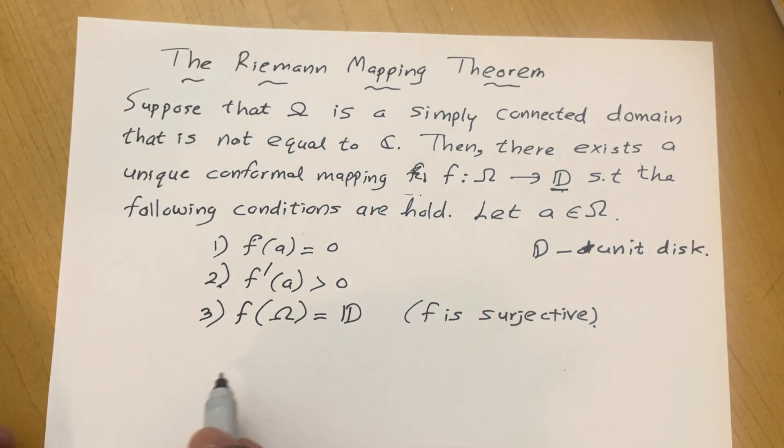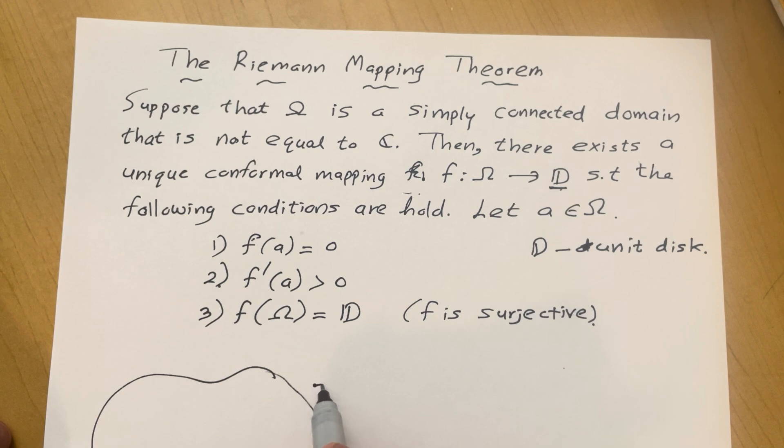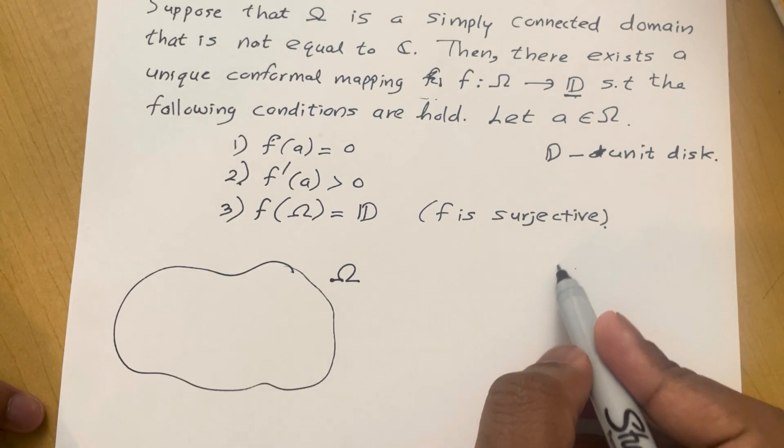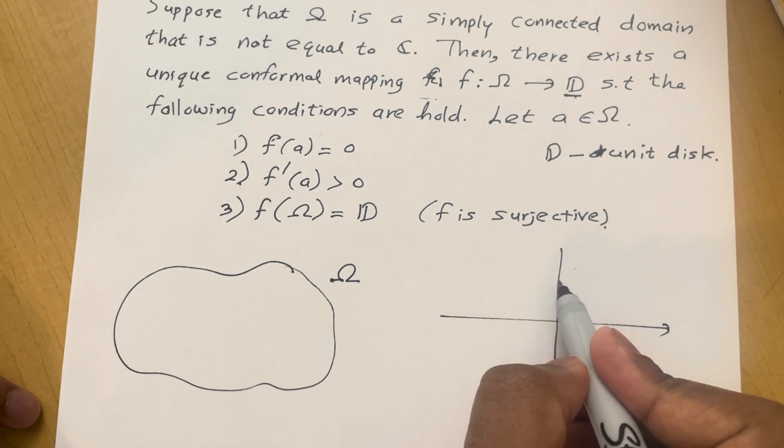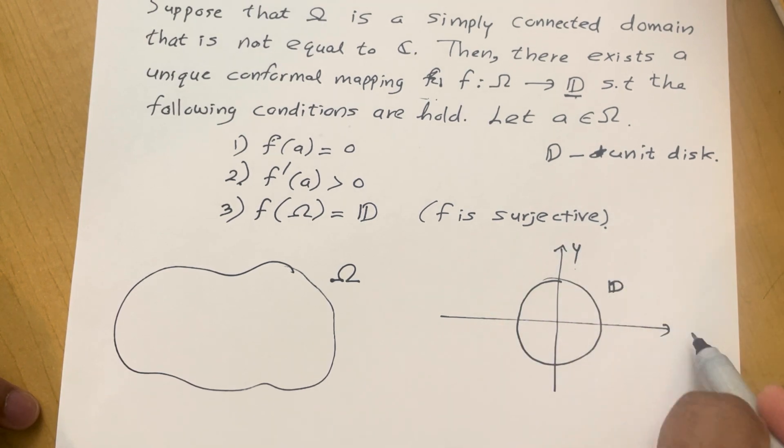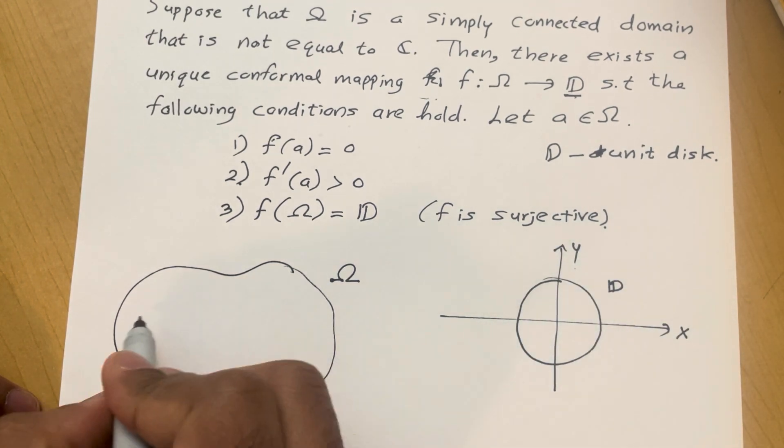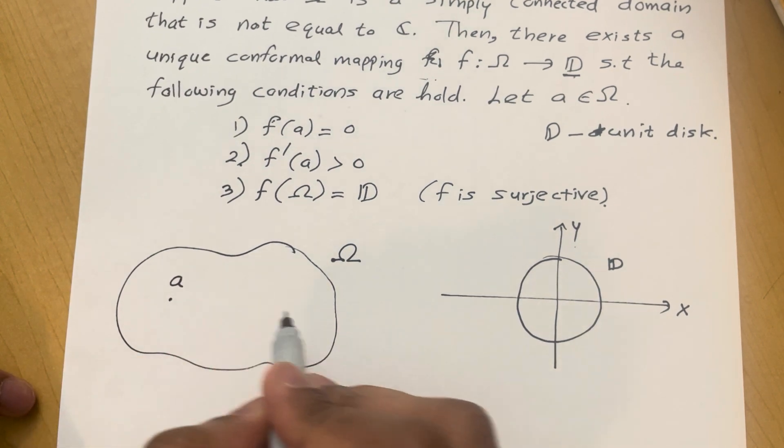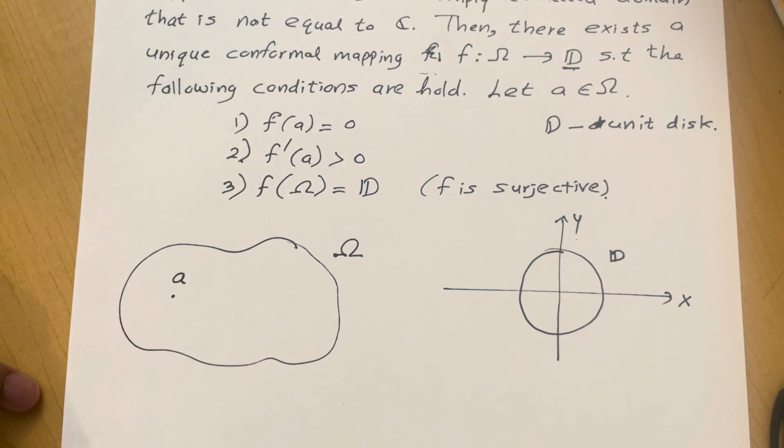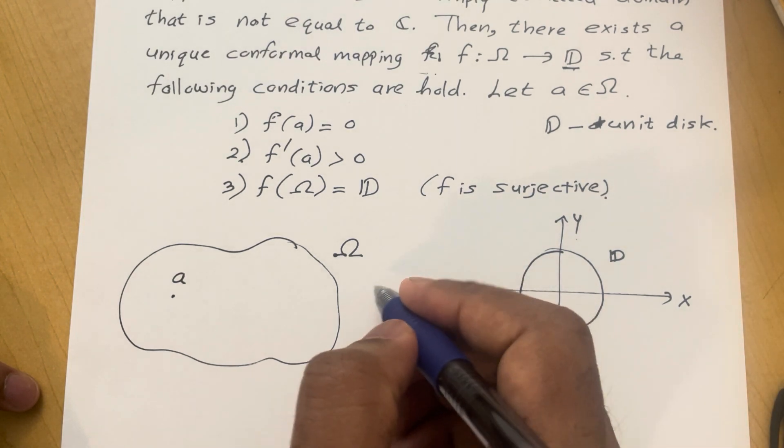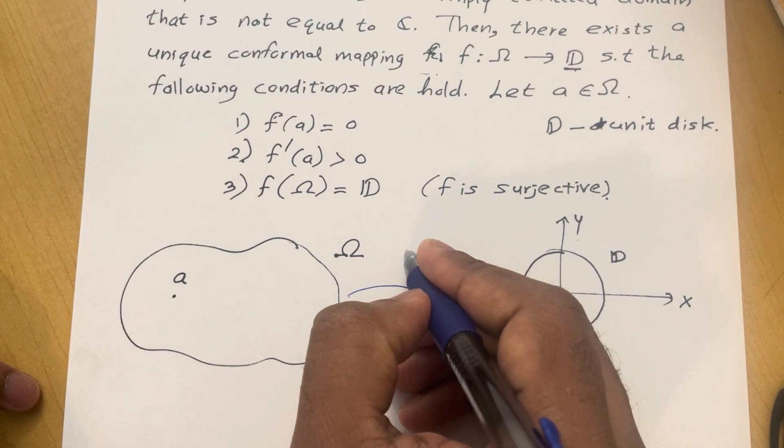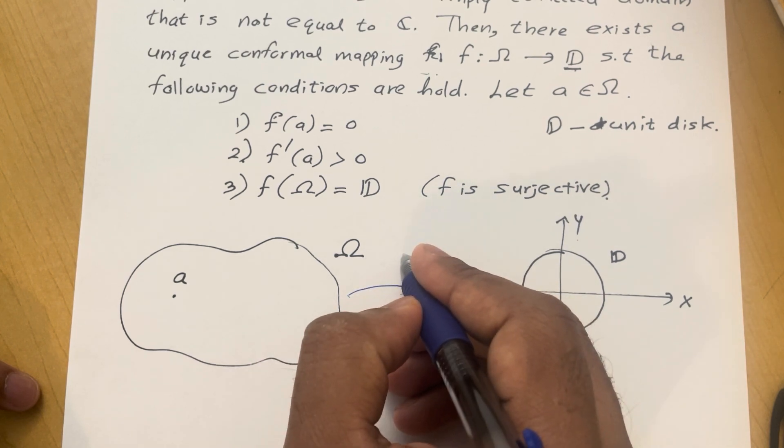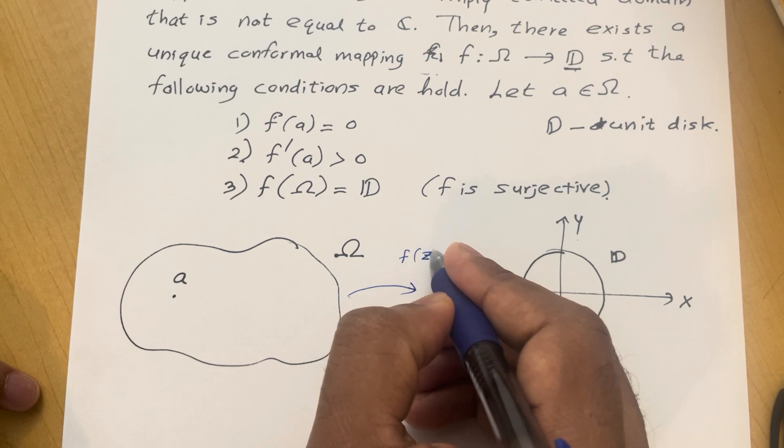So this is the idea of the theorem. You have a simply connected domain Ω and you have the unit disk D. I'm going to pick any arbitrary point in my domain Ω. Then what does Riemann mapping theorem state is there exist a conformal mapping from Ω to unit disk.